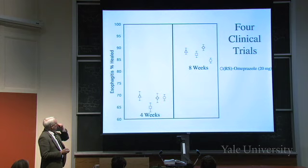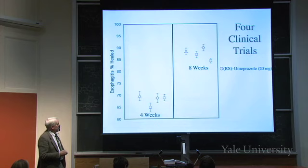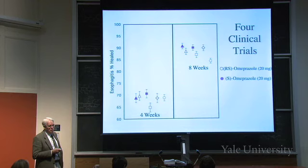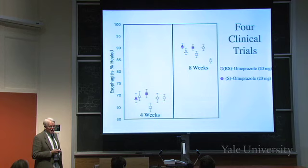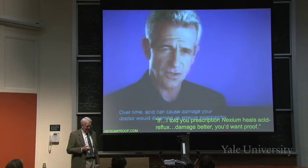Let's summarize with a graph. After four weeks and after eight weeks, these are the fractions of healing with the racemate shown in open figures across four different studies. The single enantiomer at 20 milligrams — remember that's twice the dose if one form is active — shows what you'd conclude from this. Is it worth paying seven times as much? No. But at 40 milligrams — four times the dose — it does do a better job, eyeballing the graph.